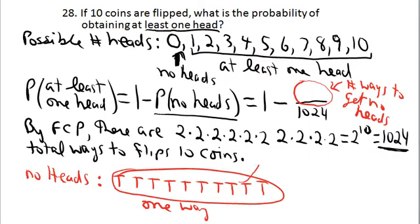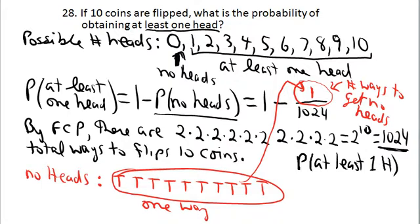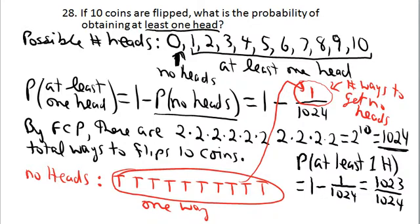So the probability that you get at least one head is 1 minus 1/1,024. If you think of 1 as 1,024/1,024, you'll immediately see that the answer is 1,023/1,024. They did want the answer as a completely reduced fraction. So the probability of getting at least one head when you flip 10 coins is 1,023/1,024.